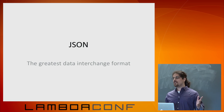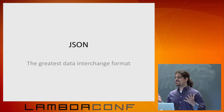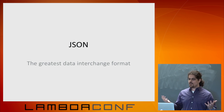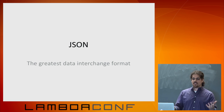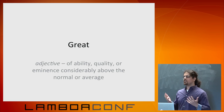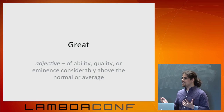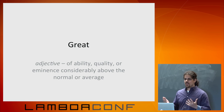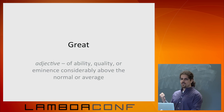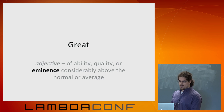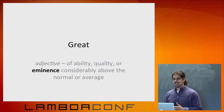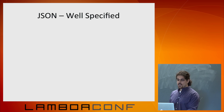You might argue, 'David, JSON's not the greatest — how can you say it's the greatest?' Well, no good talk is complete without a dictionary definition. The key is what does it mean to be great? It's eminence — maybe less so quality in JSON's case. But JSON is well-specified. For instance, when we iterate over a JSON object, this is a map and maps don't care about the order of keys.